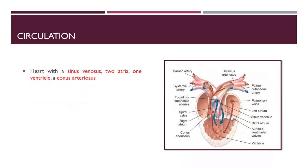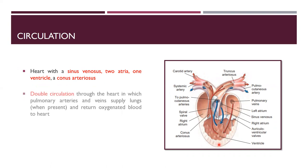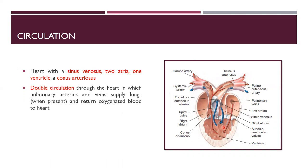The heart has a sinus venosus, two atria, and one ventricle. They have a double circulatory system. Pulmonary arteries supply deoxygenated blood to the lungs, and after being oxygenated, the blood returns to the heart through the pulmonary veins. The heart is abundantly supplied with blood vessels.